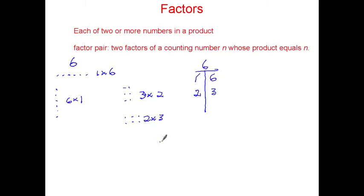Another way that you can do this is you can do a factor rainbow, so you'd have 1 times 6, and 2 times 3 for a factor rainbow. Any way of doing this works.